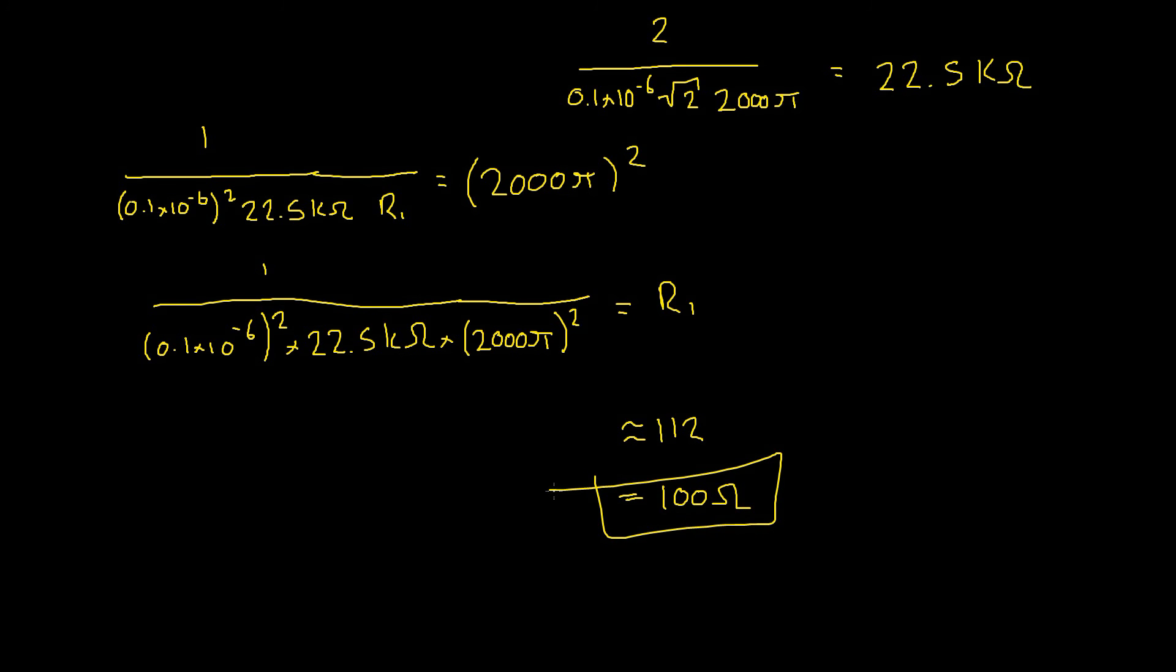And there we have it, we've found the component values which are required to give us a high pass filter with a negative 3dB frequency at 1 kilohertz.